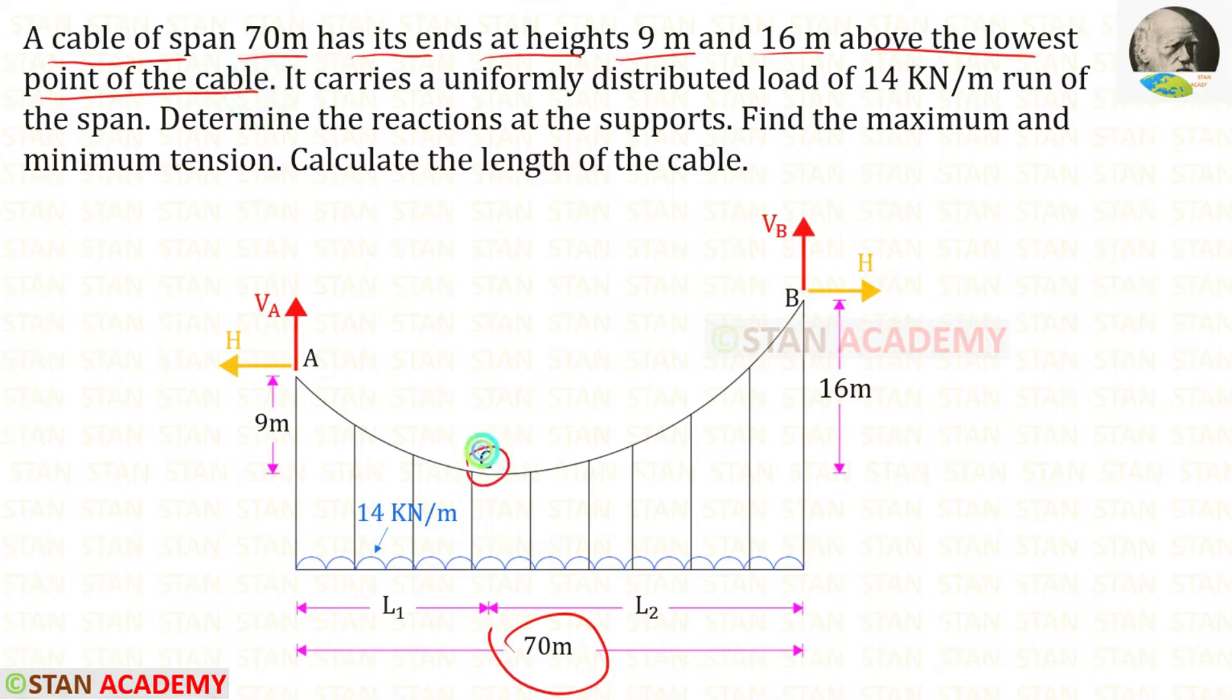It is the lowest point of the cable C. From this point support A is 9 meter above and support B is 16 meter above. It carries a uniformly distributed load of 14 kN per meter run of the span.